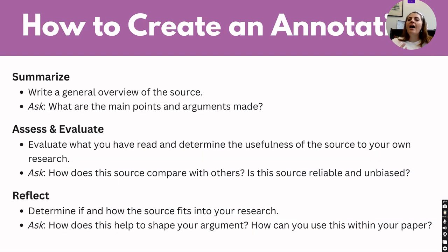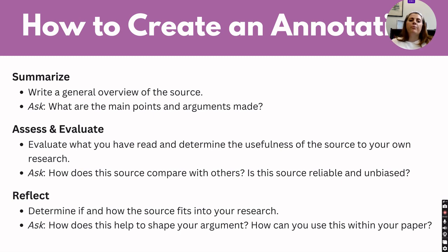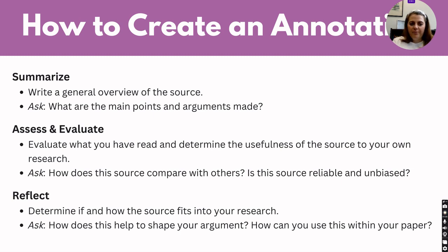So how to create an annotation. There are three steps when creating an annotation for an annotated bibliography. First, we summarize — you're writing a general overview of the source and asking the question: what are the main points and the arguments being made?